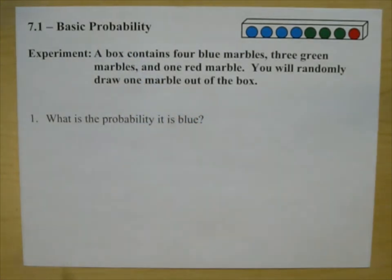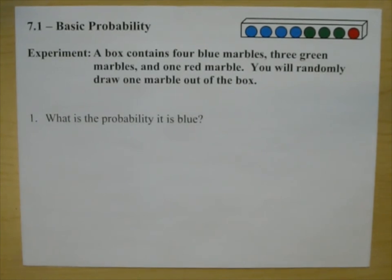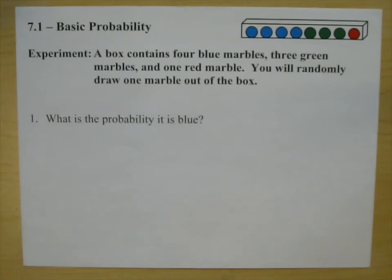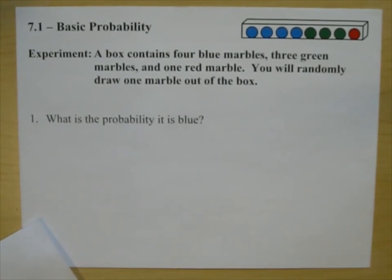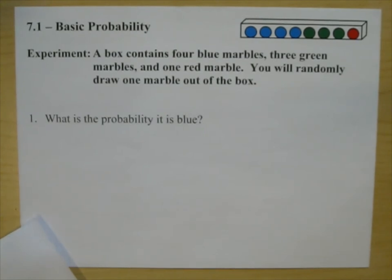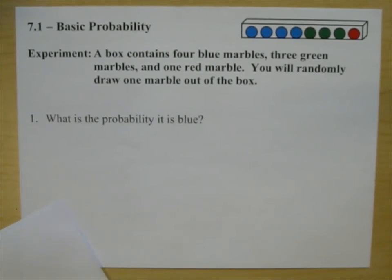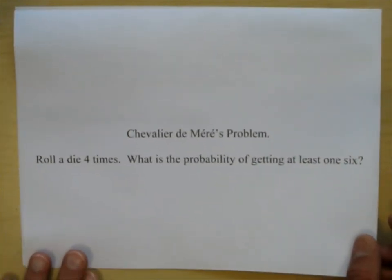Aristotle invested some time into simple probability concepts. In 1654, the mathematical theory of probability was developed in a series of letters between Pascal and Fermat. This correspondence was prompted by a gambler by the name of Demir. This was one of his problems.